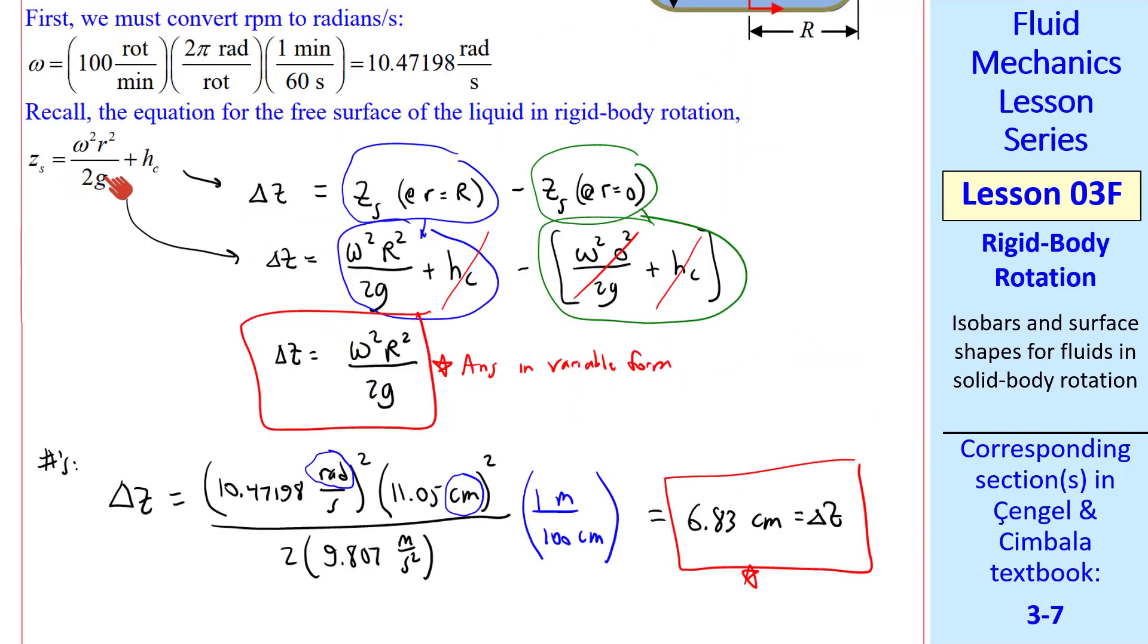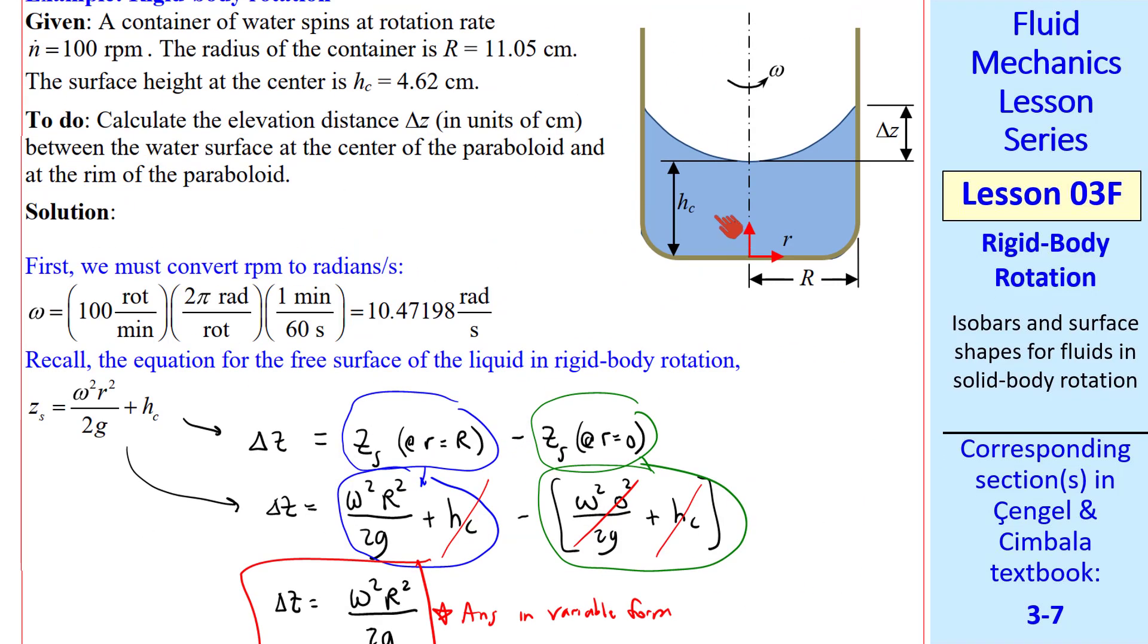Notice that density does not appear in this equation. In other words, the density of this liquid doesn't matter. In terms of the surface shape, the density of the liquid will, of course, influence the pressure throughout the liquid. In the vertical direction, pressure increases linearly like in hydrostatics. But the surface shape is independent of density.